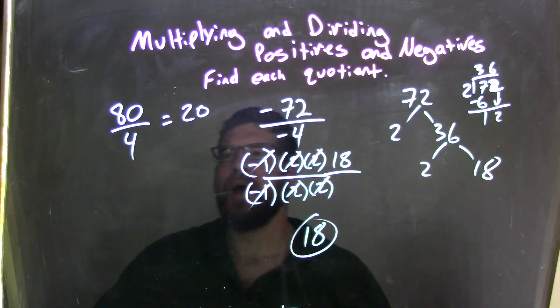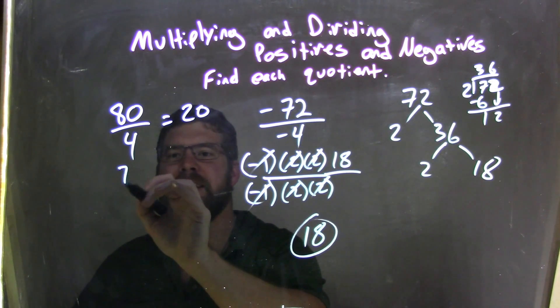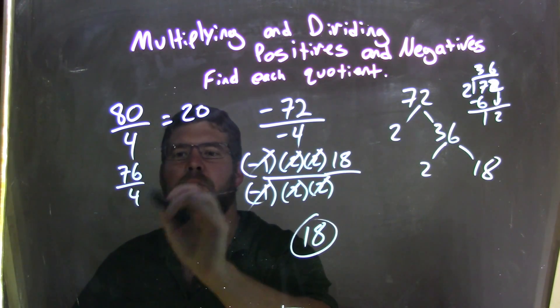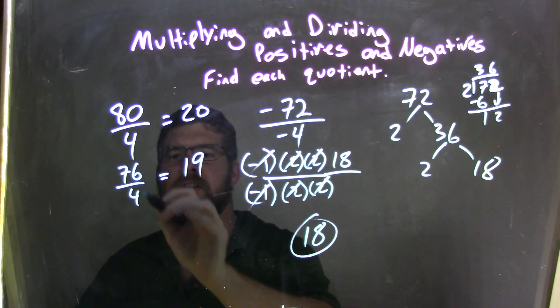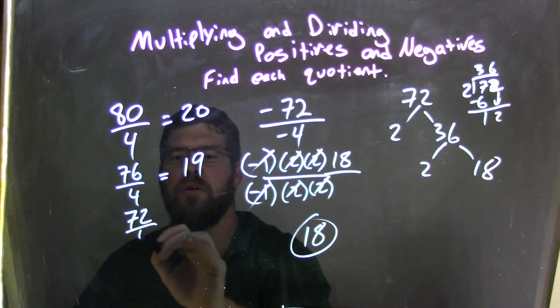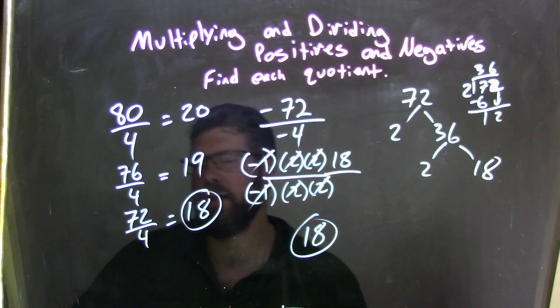Well, if I subtract another 4 from that, so if I go 80 minus 4, I get 76. Well that's just one less 4, that's 19 times. And 76 minus 4 is 72, so 4 goes into 72 eighteen times, and that's how I would get that final answer.